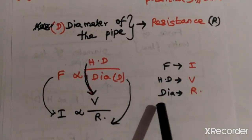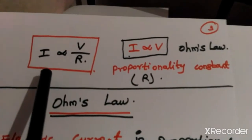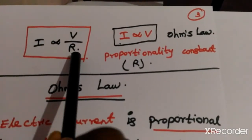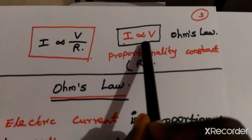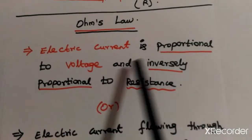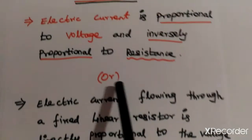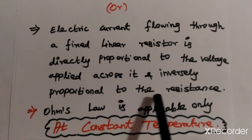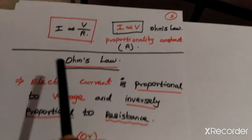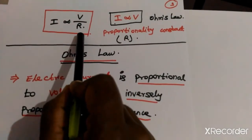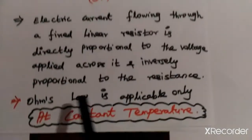Since we know F is directly proportional to height difference divided by diameter, we replace force F with current I, height difference with voltage V, and diameter with resistance R. According to Ohm's Law, the current I is directly proportional to V divided by R. Therefore, the current is directly proportional to the voltage applied across it and inversely proportional to the resistance.